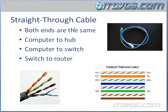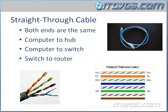When both ends are the same, it's called a straight-through cable. In this example, one end is: white-and-orange, orange, white-and-green, blue, white-and-blue, green, white-and-brown, brown. The other end is exactly the same. This is also referred to as a patch cable.